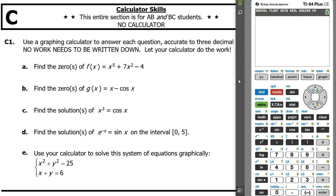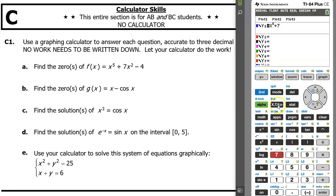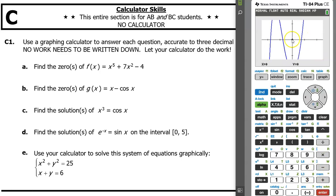For problem A we are to find the zeros of the function x to the fifth power plus 7x squared minus 4. Hit your y equals button and type that function in: x to the fifth power plus 7x squared minus 4. Go ahead and hit zoom 6 to take a look at the graph — that's always a good place to start. We are looking for the zeros or the x-intercepts.